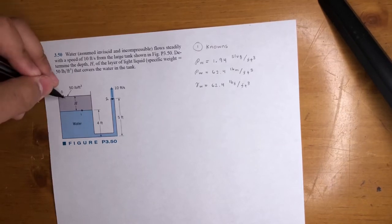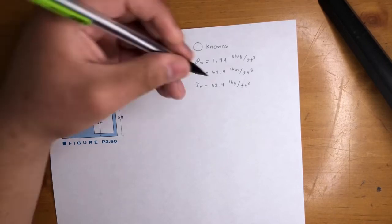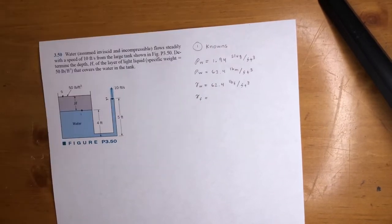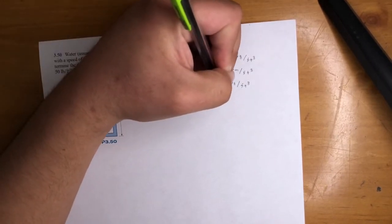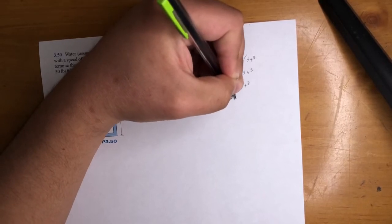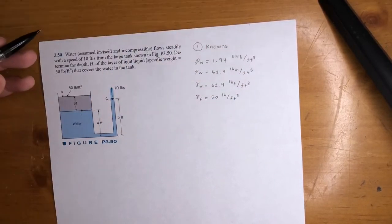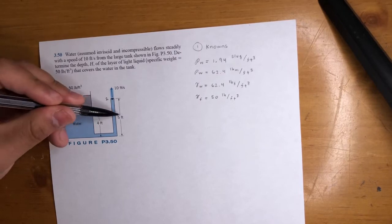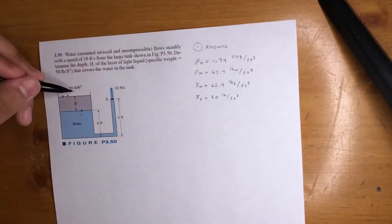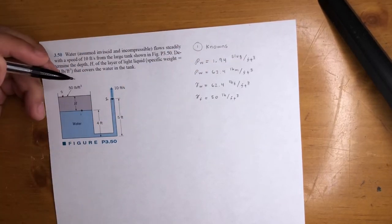We also have the gamma of this fluid right here. So let's go ahead and put that one. That is 50 pounds per feet cubed. And we should be good. Everything's in feet. Everything's in feet here. Pounds, we're all good. Same units. We could go ahead and start with Bernoulli.